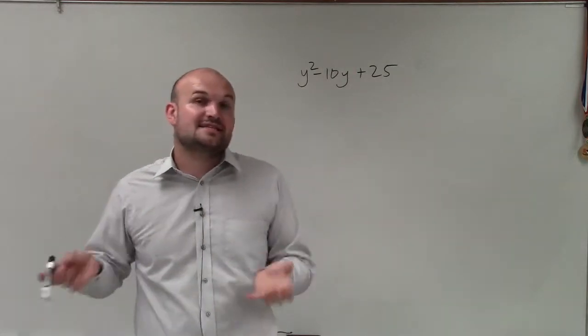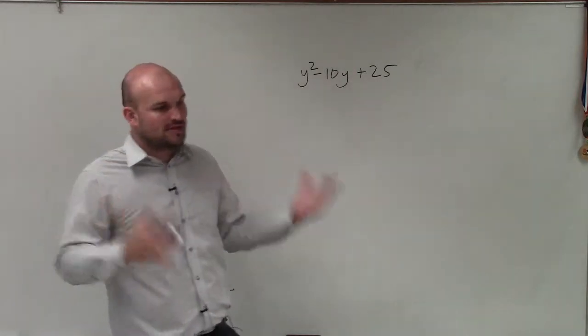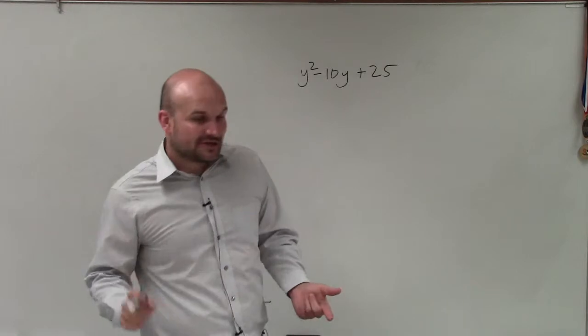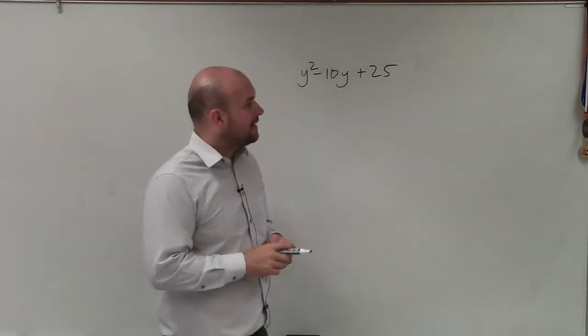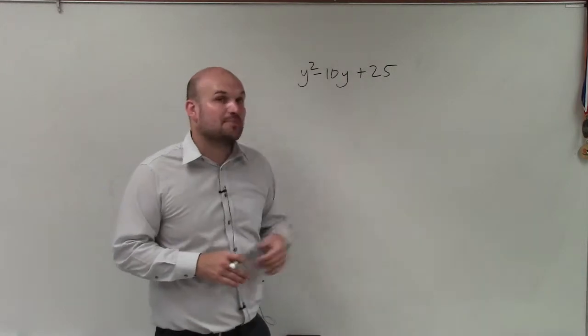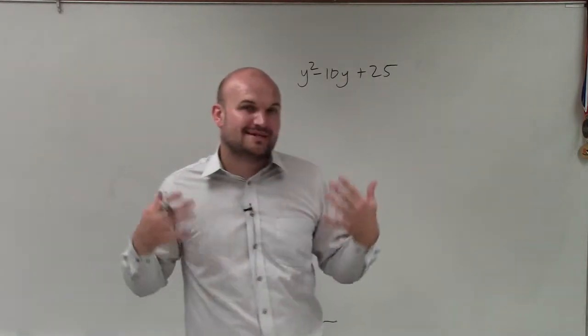If I have square terms, that makes things a lot easier for difference of two squares as well as perfect square trinomials. What I notice is this is actually a perfect square trinomial. The way to identify that is looking for square terms in the first and last term of your trinomial.